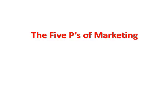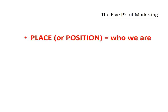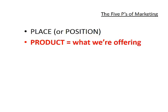Number one is place, also sometimes referred to as position. This is who we are as we're positioned in the field — who our organization is that produces or stages or hosts the projects, the events, the demonstrations, the art exhibitions, whatever it is we're putting forward. Number two is product, which is logically that which we are presenting: the shows, the exhibitions, etc. — what it is we're offering to the public.